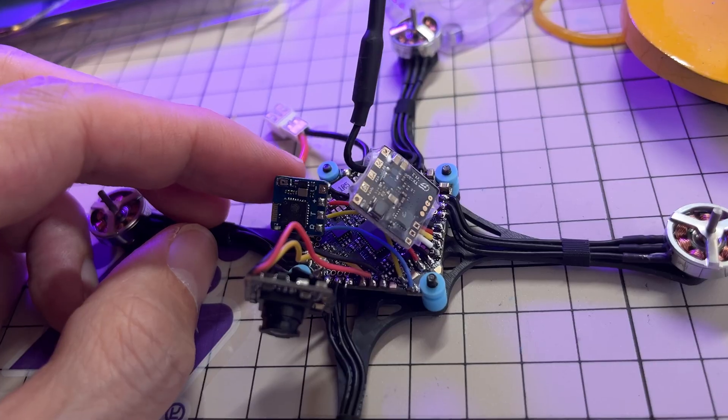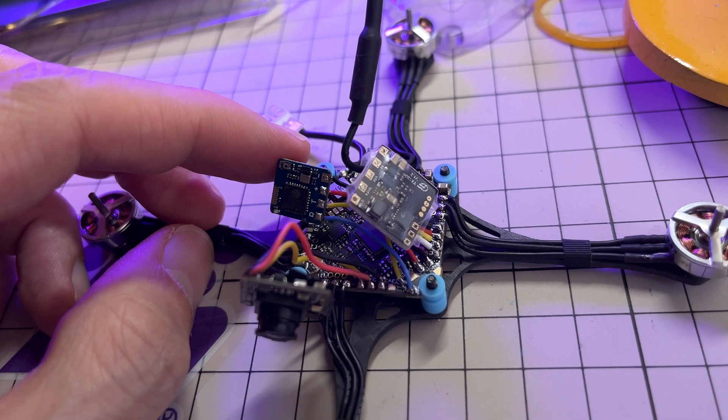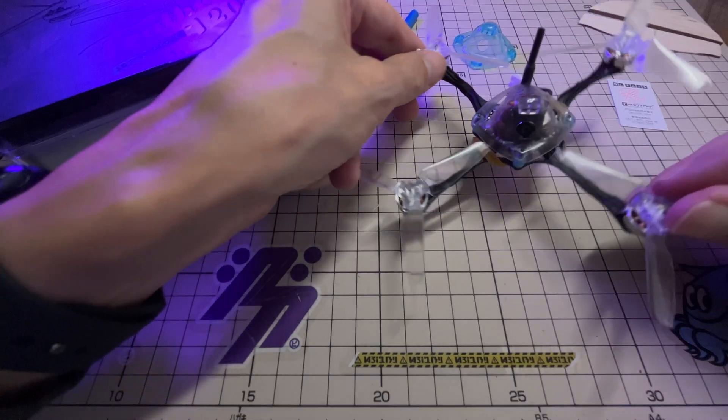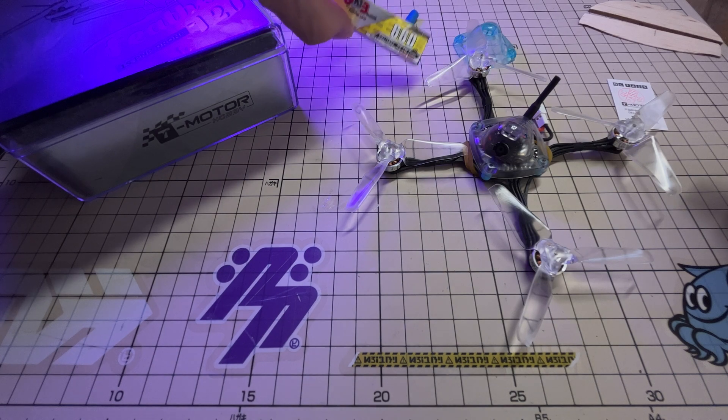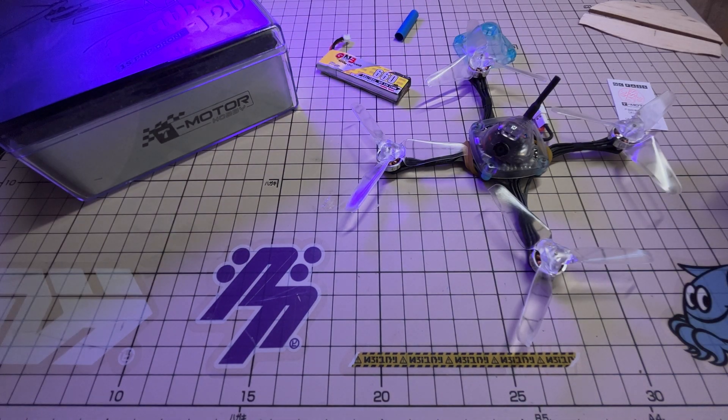So you have to take the canopy off, solder the receiver onto the connectors there. And with the receiver, it's coming in at about 33 grams, and I was choosing to fly it on this 660, which weighs about 15 grams, so all-up weight gets up to about 47-48 grams.